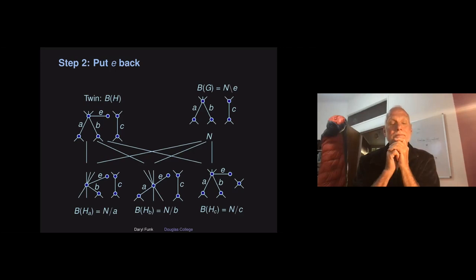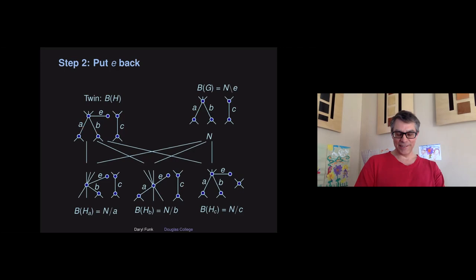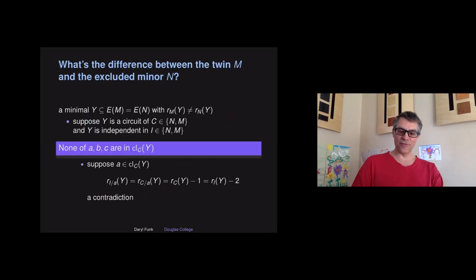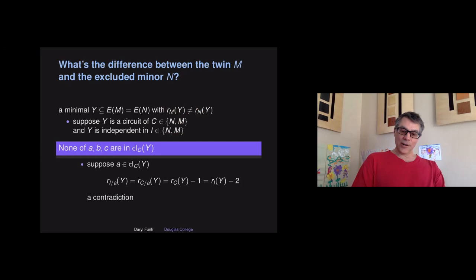Suppose we've got our three elements and I've got element C, I can contract it far away from A and B, and that sorted things out. Now I've got my twin — a graph such that no matter where I contract A, B, C, or any subset thereof, I see graphs representing the contractions of N. Now, what's the difference between our twin M and our excluded minor N? Choose a minimal set Y where the ranks differ. If Y is minimal with this property, then it's a circuit in one of the two matroids and independent in the other. Call the matroid in which Y is a circuit C, and the one in which it's independent I. Our first claim is that none of A, B, or C can be in the closure of Y in the matroid in which Y is a circuit.